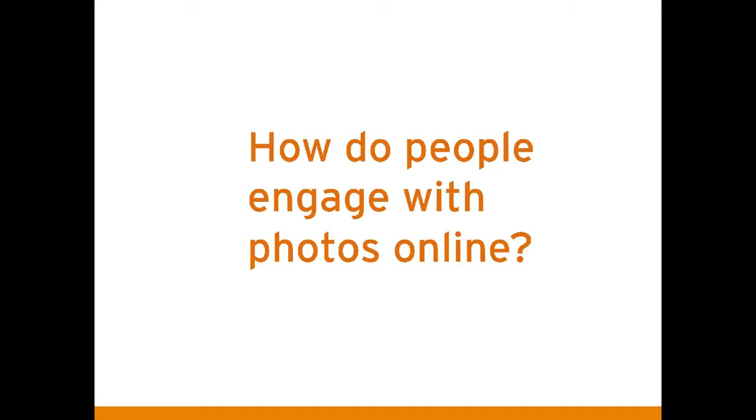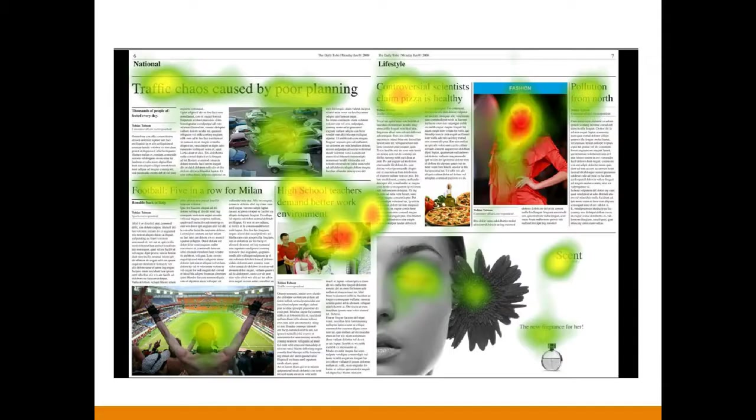Sometimes we can't hire a professional photographer — sometimes we have to do it ourselves. But next I want to talk about how people engage with photos online — what do we know from research? This is a heat map. A device checks the eye fixations of somebody interacting with a screen. Red areas mean lots of eye fixations, yellow is less, green is less. We know from research that people tend to look at faces.